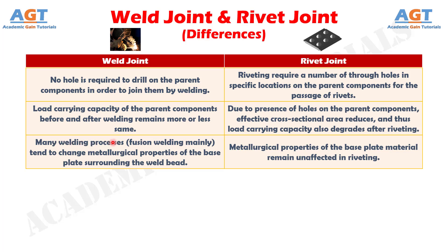effective cross-sectional area reduces, and thus load carrying capacity also degrades after riveting. Number 3: many welding processes — fusion welding mainly — tend to change metallurgical properties of the base plate surrounding the weld bead, whereas metallurgical properties of the base plate material remain unaffected in riveting.